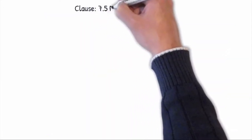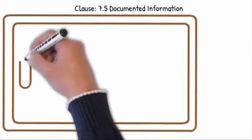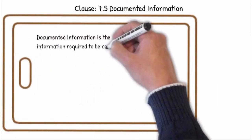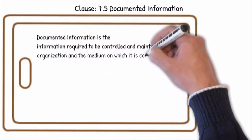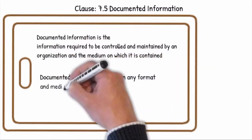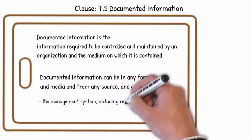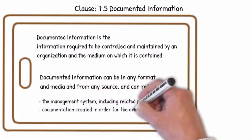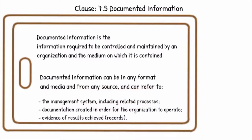Clause 7.5 Documented Information: Documented information is the information required to be controlled and maintained by an organization and the medium on which it is contained. It can be in any format and media and from any source, and can refer to the management system including related processes, documentation created in order for the organization to operate, and the evidence of results achieved, e.g. the records.